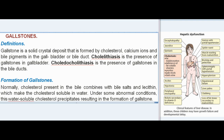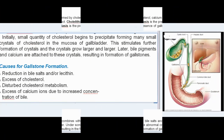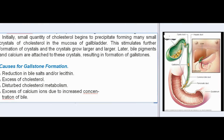Gallstones are solid crystal deposits formed by cholesterol, calcium ions, and bile pigments in the gallbladder or bile duct. Cholelithiasis is the presence of gallstones in the gallbladder; choledocholithiasis is the presence of gallstones in the bile ducts. Normally, cholesterol in bile combines with bile salts and lecithin, making it soluble in water. Under abnormal conditions, this cholesterol precipitates, forming gallstones. Small cholesterol crystals initially form in the gallbladder mucosa, grow larger, and bile pigments and calcium attach to them, resulting in gallstones.